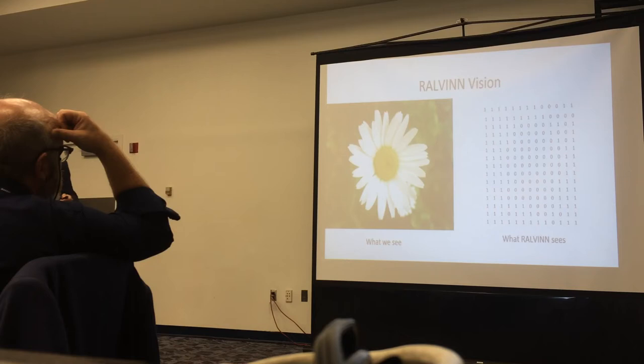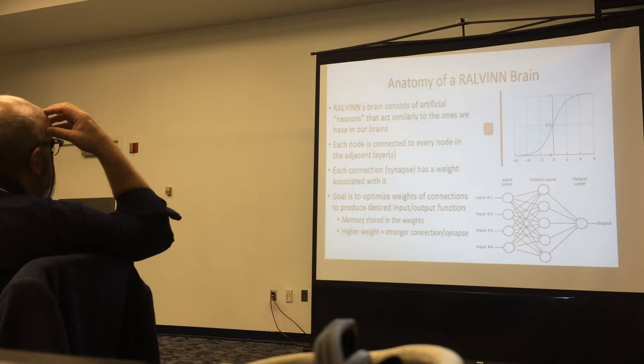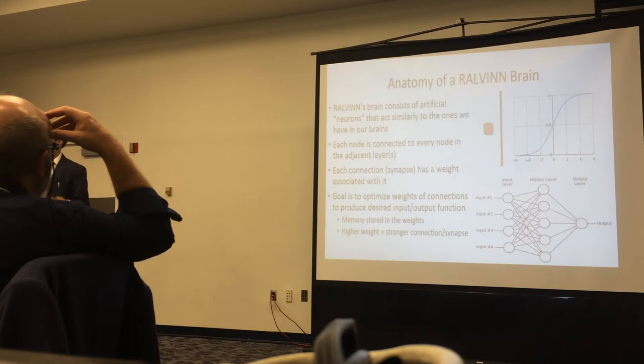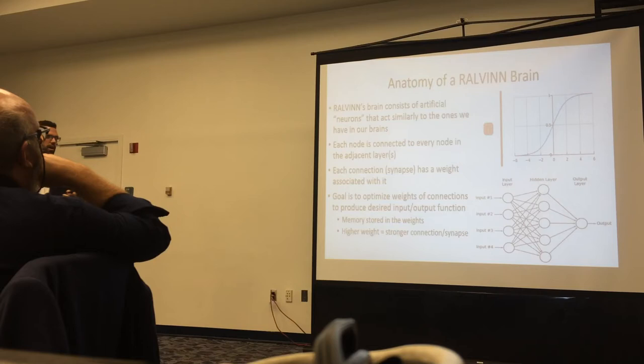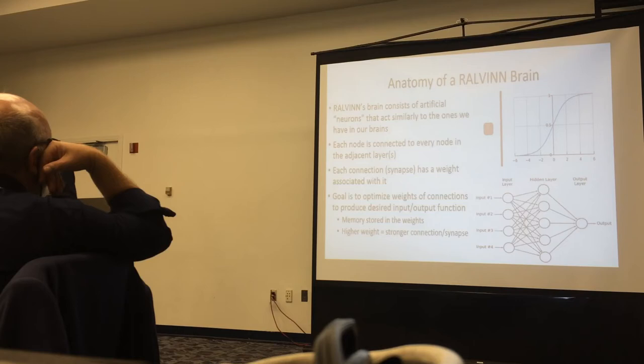So if we want to get Ralvin to identify images and learn from them, we use this thing called an artificial neural network. This is what it looks like, a very simple depiction. We have an input layer, an output layer, and a hidden or intermediate layer. You could have more than one hidden layer, that's where deep learning and Google's DeepMind come from. And you could have more than one output node. So each node or neuron is connected or synapsed with every other node in the adjacent layer. So the network is very robust. And each connection has a weight associated with it. So a higher weight equals a stronger connection, essentially, if we're going to a biological scheme.